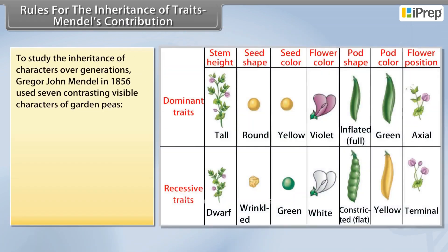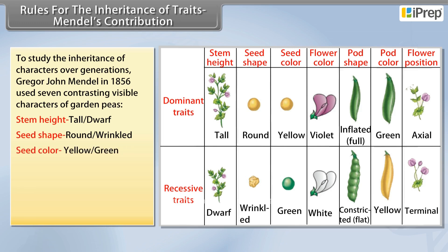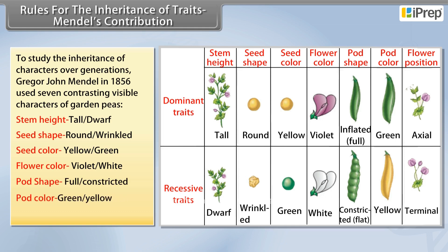To study the inheritance of characters over generations, Gregor John Mendel in 1856 used seven contrasting visible characters of garden peas: Stem Height (Tall/Dwarf), Seed Shape (Round/Wrinkled), Seed Color (Yellow/Green), Flower Color (Violet/White), Pod Shape (Full/Constricted), Pod Color (Green/Yellow), and Flower Position (Axial/Terminal).